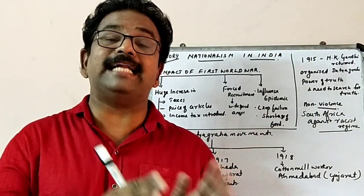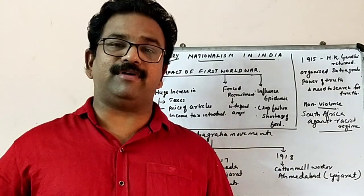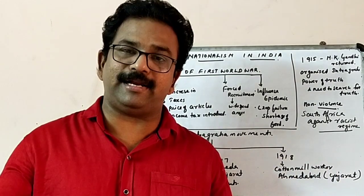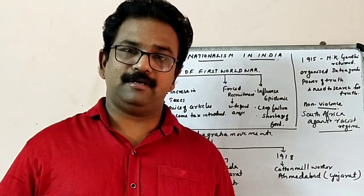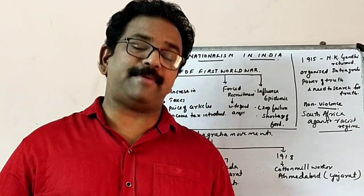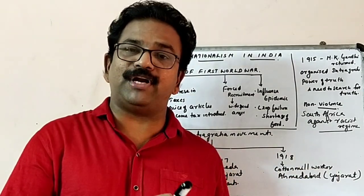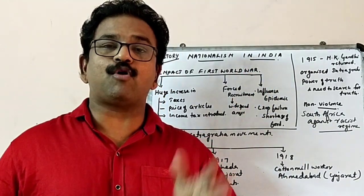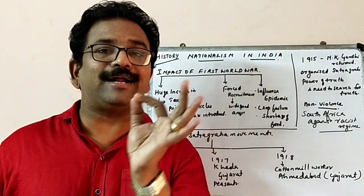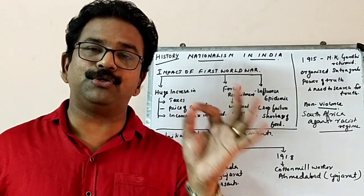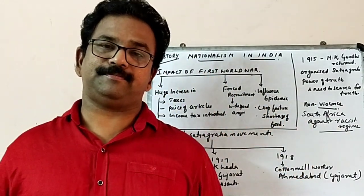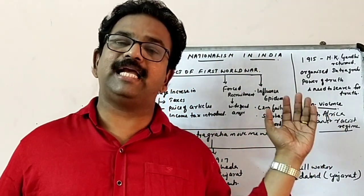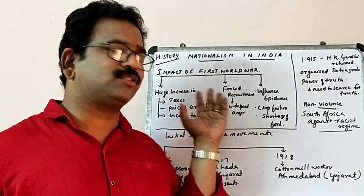Crop failure occurred in many parts of the country in 1918 and 1919. Crop failure led to famine, which caused food shortages. This also influenced the influenza epidemic. Because of all this, a large number of people died. According to the 1921 census, 12 to 13 million people perished as a result of famine and epidemic. These were the impacts of the First World War in India.